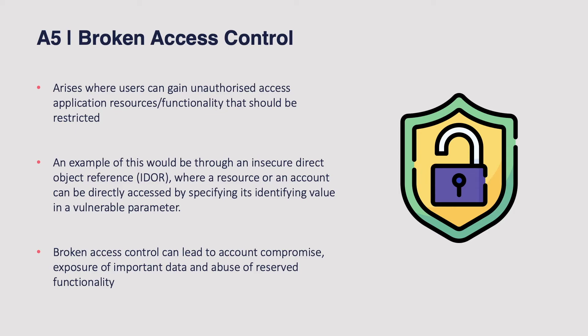Now on to broken access control, which occurs where users are able to access resources or functionality that are outside of their permissions. A popular textbook example is a vulnerability such as an insecure direct object reference, or IDOR. An IDOR arises where an application uses untrusted user-supplied input to access an object directly. Say we have an application that uses a GET request parameter such as an ID value to determine the account shown to the user — the user can then change the ID number to an arbitrary value to access another user's account, essentially breaching horizontal access control. This can lead to compromised accounts, data theft, and use of functionality reserved for different user roles.